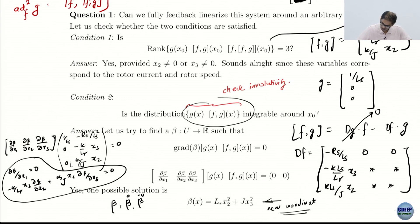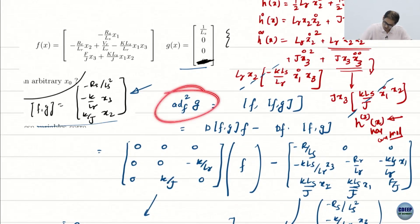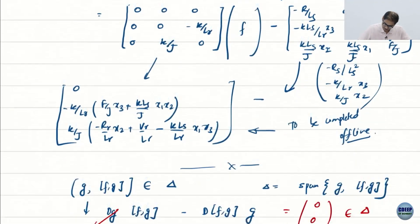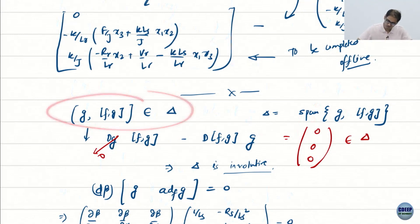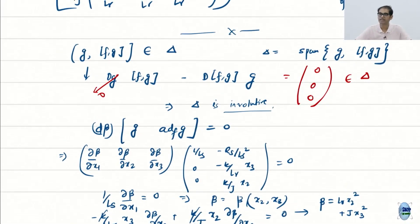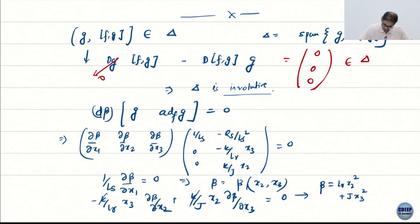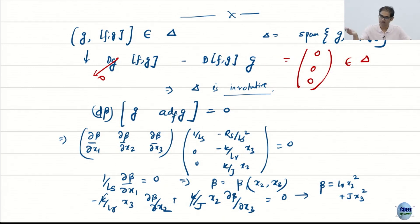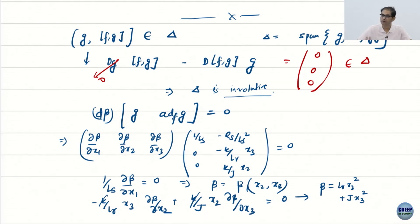We verified that the Lie bracket of g and ad_f g turns out to be 0. Since 0 is trivially in any vector space, this means the involutivity condition is satisfied. So we were able to verify both conditions, confirming the system is fully feedback linearizable.